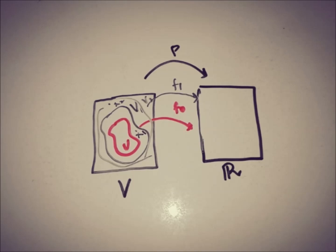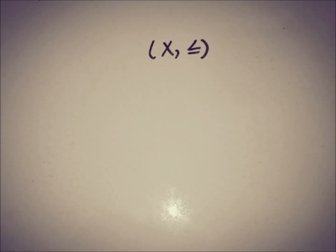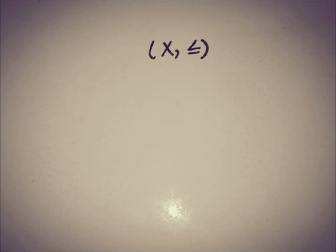For this we will use Zorn's Lemma. The statement of Zorn's Lemma is: if we have a partially ordered set X with the property that every chain in that set X has an upper bound, then X contains a maximal element.